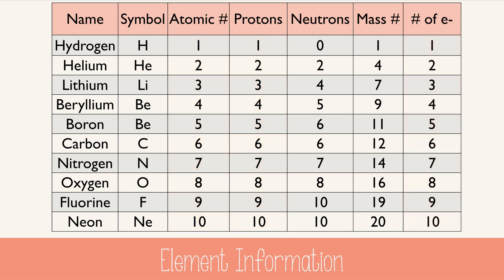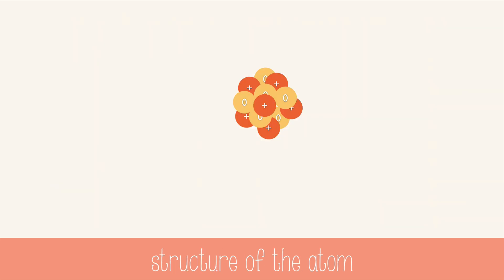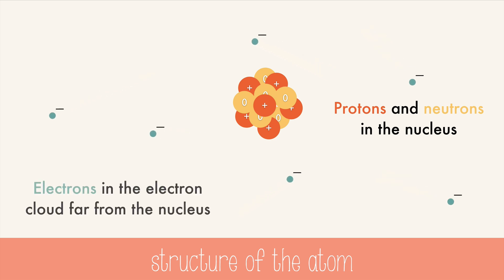So let's take a quick look at the structure of an atom. Inside the atom is a nucleus where positively charged protons and neutral neutrons are clustered together. Swirling around in the electron cloud far from the nucleus are the super tiny, negatively charged electrons.